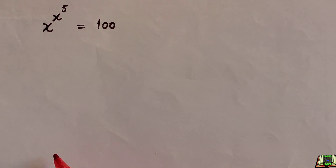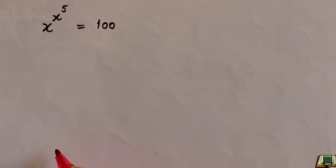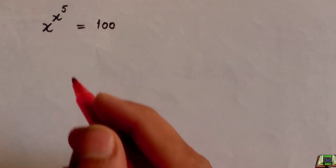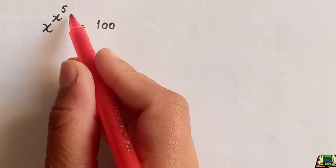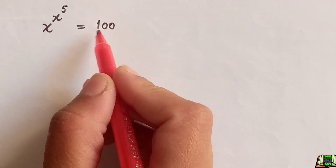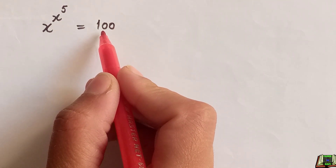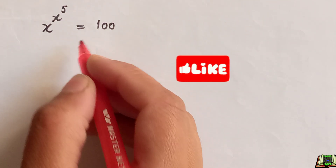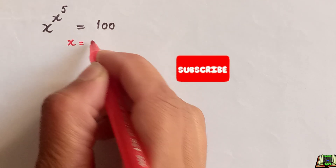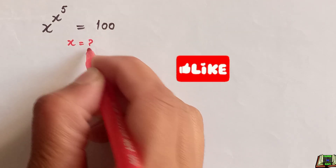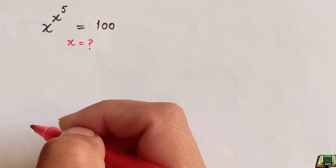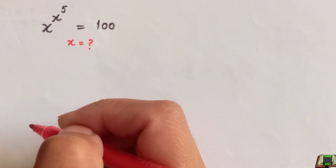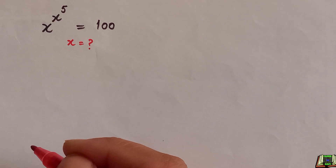Welcome, everyone. In this video tutorial, we have the exponential equation x to the power of x to the power of 5, equal to 100. We will see how to find the value of x, so let's get started and see the solution.